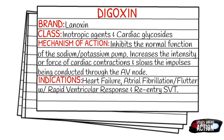Today's medication is called Digoxin. It falls under the class of inotropic agents and cardiac glycosides. The mechanism of action is that it inhibits the normal function of the sodium-potassium pump, increases the intensity or force of cardiac contractions, and slows the impulses being conducted through the AV node.